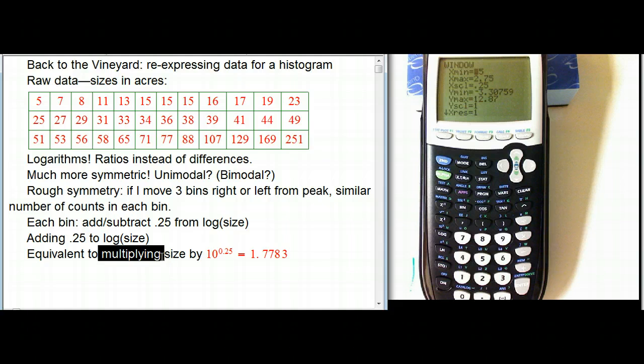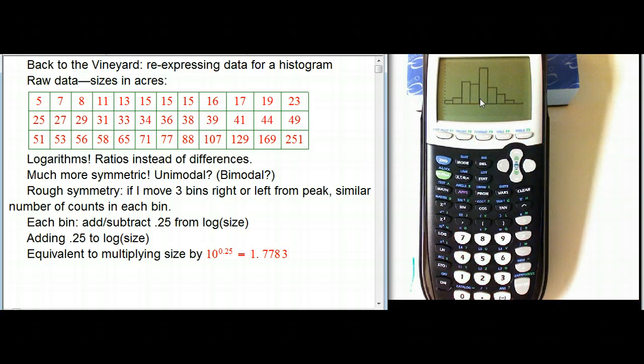So the great thing about logarithms is adding or subtracting to the logarithm is really a replacement for multiplying. So multiply, like the ratio of two things, is going to be this number, so a little less than two. So what that says, if I go back to the picture, when I compare this bin to this bin next to it, I'm not adding a certain number to the acreage, I'm multiplying the acreage by a number a little less than two.